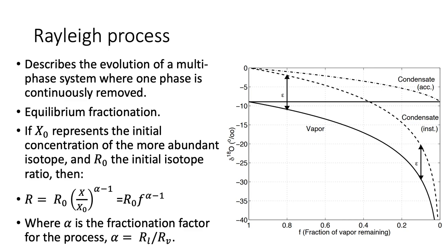A very simple conceptual framework for fractionation was developed by a scientist called Rayleigh. This describes the evolution of a multi-phase system where one phase is continuously removed — thinking of it as an equilibrium fractionation process, which is an idealization but makes things simple. For example, suppose you have a parcel of air near the surface and you take it up to greater altitude. As it goes up, it keeps condensing and the liquid water gets continuously removed. The process of condensation within an updraft can, to some approximation, be considered a Rayleigh process.